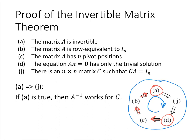To prove this chain, we have five if-then statements to prove. We start by proving that if A is true then J is true. Statement A says the matrix A is invertible, and J says there's an n by n matrix C such that C times A is the identity matrix. All we need is to use A inverse in place of C, because A inverse times A really does equal the n by n identity matrix.